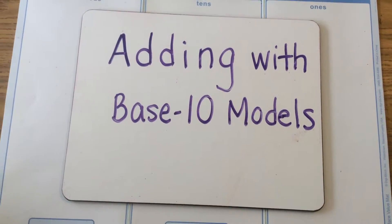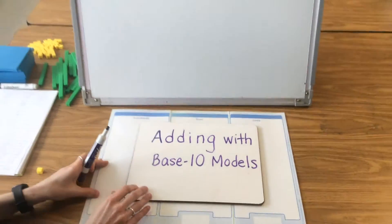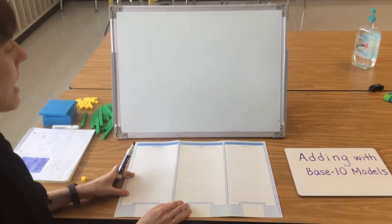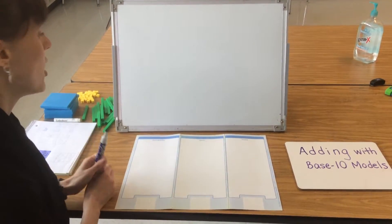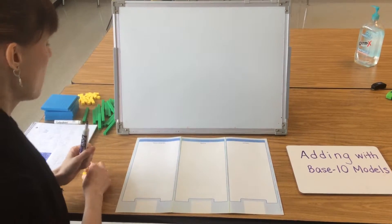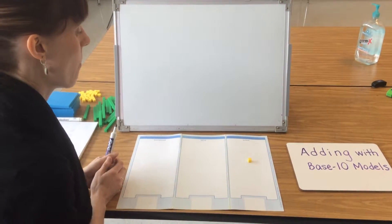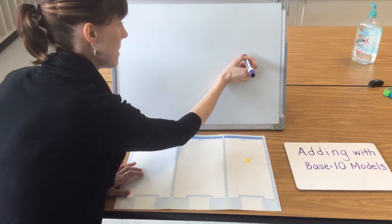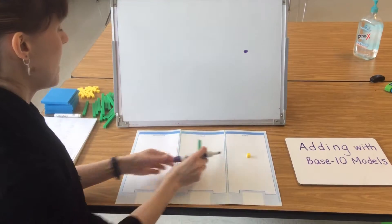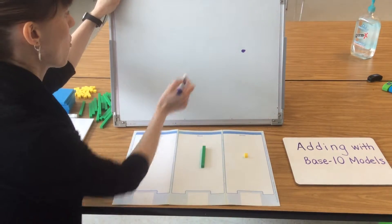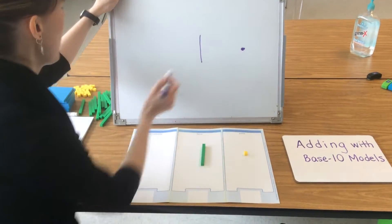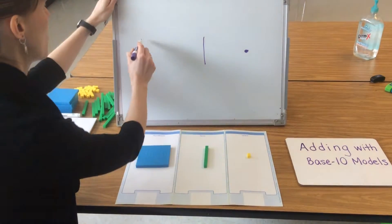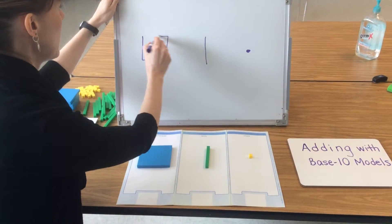Adding with base 10 models. Today we're going to practice solving some addition problems using the base 10 blocks and by drawing pictorial models. Just to review from our previous videos: these blocks represent ones and we draw them with a small dot, these blocks represent tens and we draw them with a line, and these blocks represent hundreds and we draw them with a square.